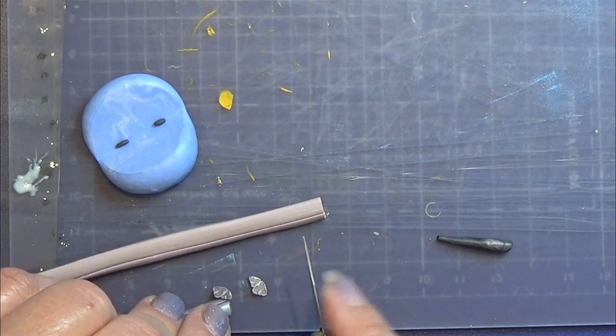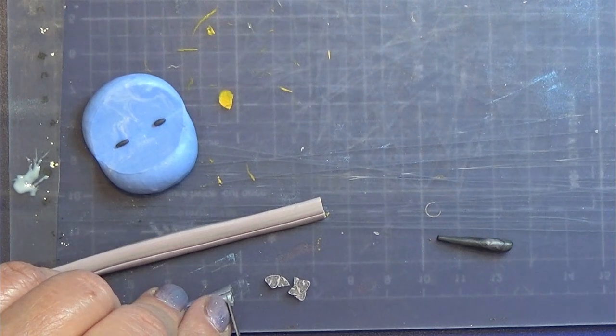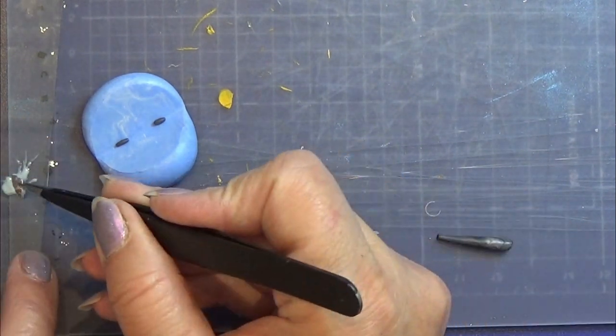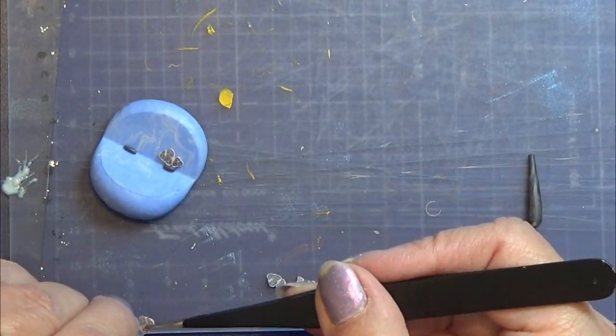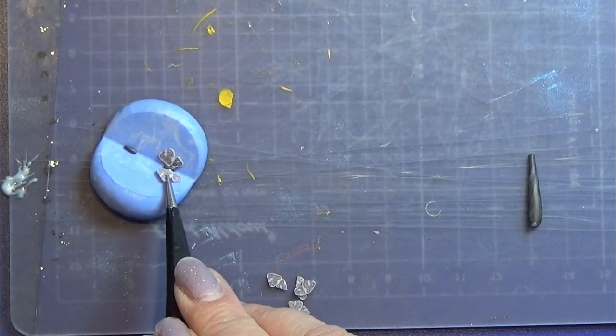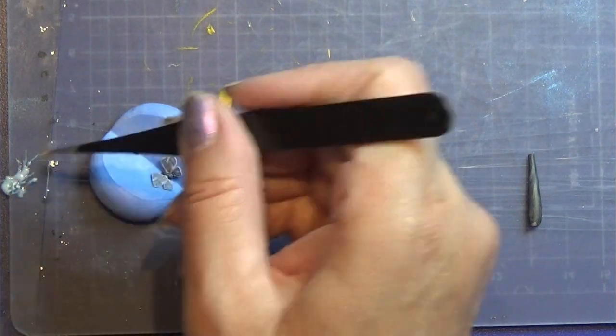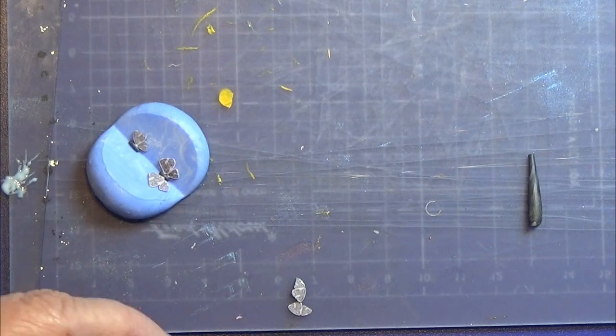You need two slices for one butterfly so you have the two wings. I am going to dip them here in bake and bond and then place them on each side on this little oblong part for the body just like that. And when I made a few of these, then I am just going to bake them and there I have some very easy cute butterflies.